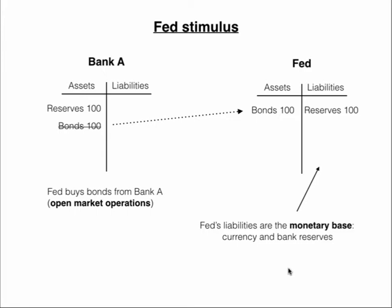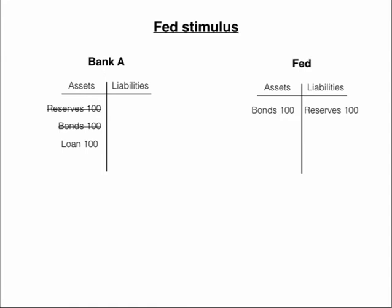If the Fed wants the money supply to be bigger, it can just keep increasing reserves, and if it wants to decrease it, it can reduce reserves. The Fed bought up these bonds and created these reserves, and this bank now has this asset of bank reserves. Since these are not being held as backing of a deposit, these are all excess reserves. The bank can just turn around and lend these out, and then we're going to get the whole money multiplier process.